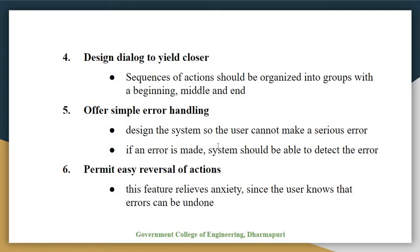The sixth golden rule is to permit easy reversal of actions. This feature relieves anxiety since the user knows that errors can be undone, thus encouraging exploration of unfamiliar options. The units of reversibility may be a single action, a data entry, or a complete group of actions.